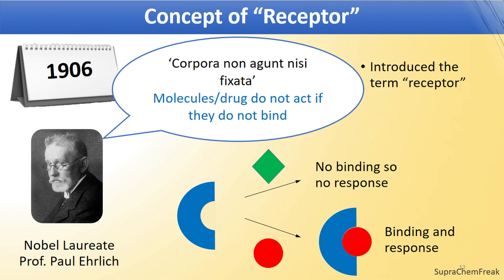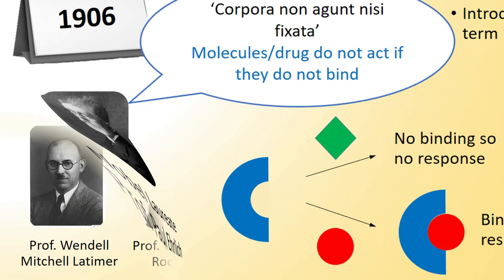In the early 20th century, Nobel laureate Professor Paul Ehrlich, a German Jewish physician and scientist who worked in the fields of hematology, immunology, and antimicrobial chemotherapy, established the concept of the receptor. He proposed that molecules and drugs do not act if they do not bind, which has great implications in various areas of biomedical research.